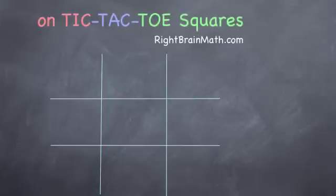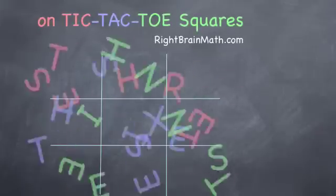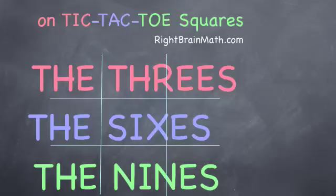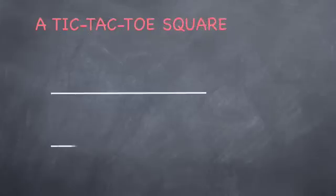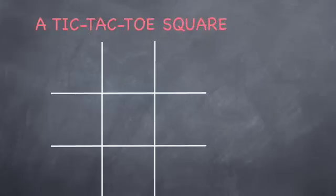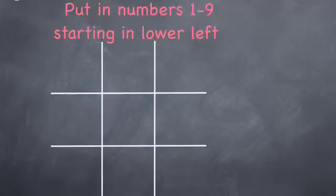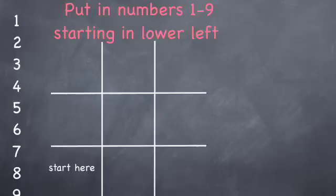Today we are using tic-tac-toe squares to learn the threes, the sixes and the nines. First we make our tic-tac-toe square. You know how to do that. Then we add the numbers one to nine and we will start in the bottom left going up.